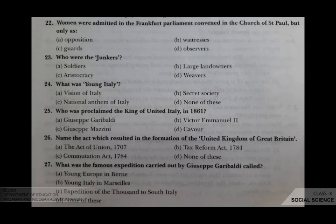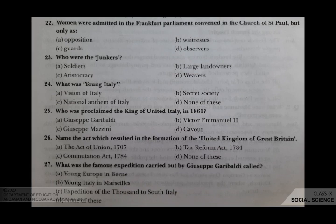The 22nd question: women were admitted in the Frankfurt Parliament convened in the church of Saint Paul, but only as? Your options are A opposition, B waitresses, C guards, D observers. In the Frankfurt Parliament the women were allowed, and the correct answer is D, observers.